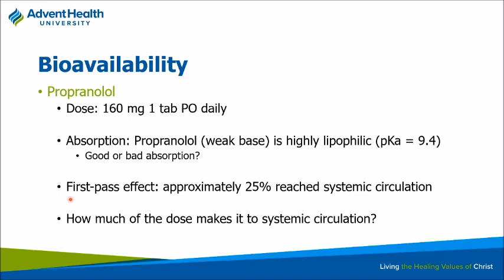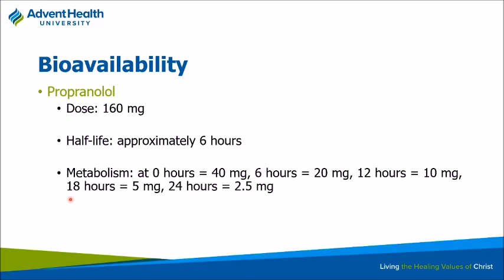Back to bioavailability — 25% of propranolol actually makes it into systemic circulation. Be careful with IV to PO dose conversions. A lot of drugs are one-to-one, but this is not one of those. The half-life of propranolol is approximately six hours. At hour zero, after absorption, 40 mg is circulating — only 25% of the original 160 mg. Six hours later, only 20 mg; then 10, 5, 2.5 — until eventually you have undetectable concentrations. Half-life means the time it takes to eliminate half of that drug.